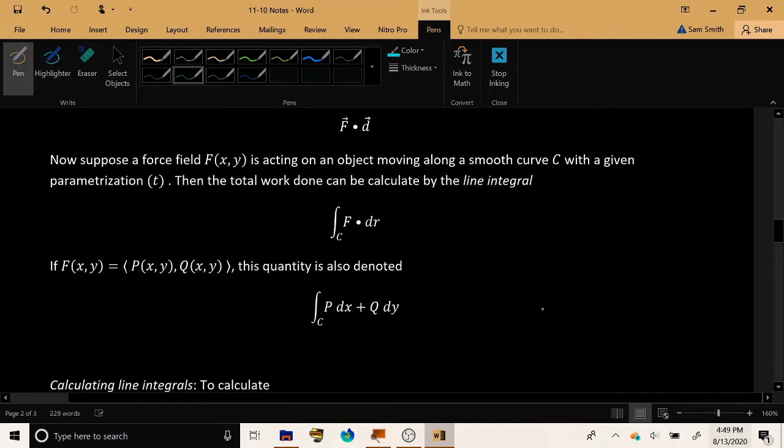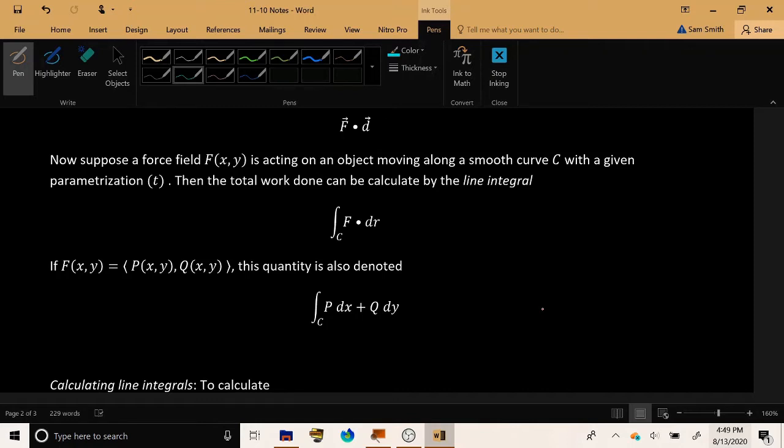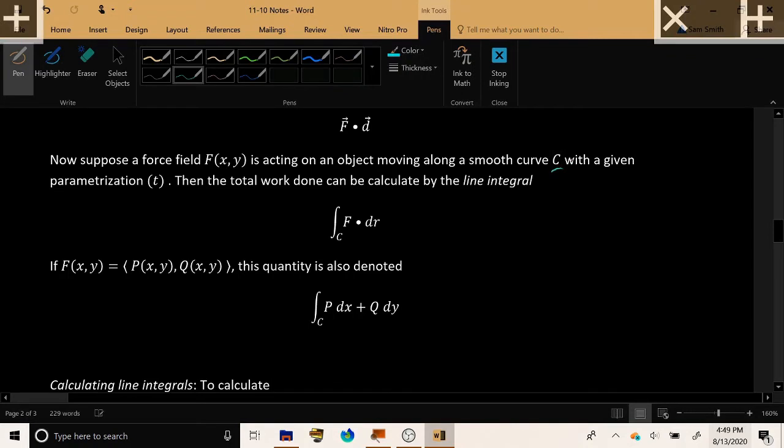Now suppose you have a force field. For example, suppose you have an object which is emitting a gravitational force field. And that gravitational force field is acting on an object as that object moves through a smooth curve called C. Perhaps the object is in orbit around a planet. One could ask yourself, how much work is being done by the planet's gravitational force field on the object as it moves in orbit around the planet. And answering that kind of question requires us to calculate a line integral. We calculate F · DR. This is the notation.